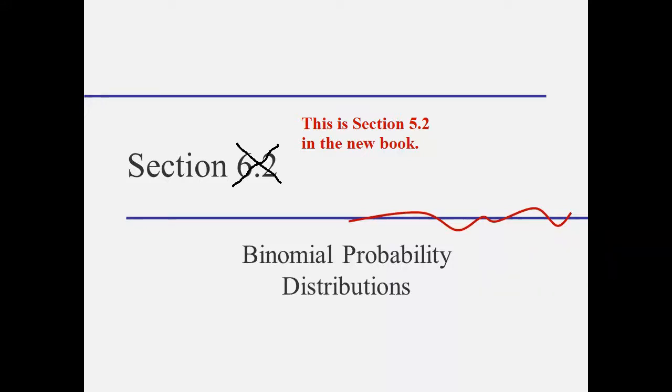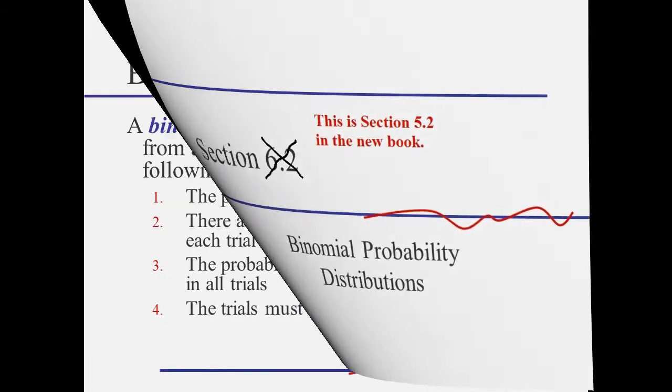In this video, we'll talk about a specific type of discrete random variable called a binomial random variable.